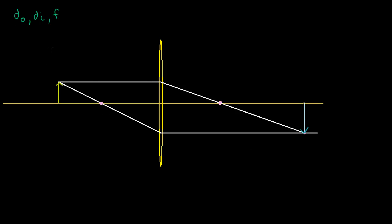What I want to do is come up with a relationship between these values. So let's label them here and do a little bit of geometry and algebra to figure out if there is an algebraic relationship. The first number, the distance of the object, is this distance from here to here — this is d₀, the distance the parallel light ray traveled before it got refracted to the lens. The distance from the image to the lens is dᵢ — this is how far the parallel light ray had to travel. And then we have the focal length f, which is this distance right here, and also on the other side.